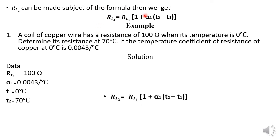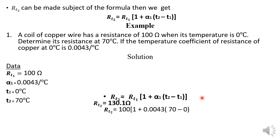Using the formula, R_t2 equals R_t1 times one plus alpha_1 times the difference in temperatures. Substituting all the given values, R_t2 works out to 130.1 ohms. This is a basic example, but all other problems can be solved the same way — just analyze the data, substitute into the given equation, and solve.